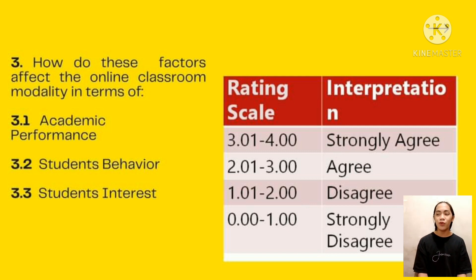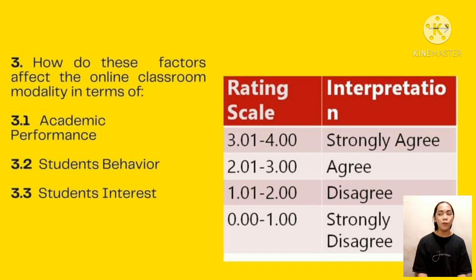The rating scale interpretation is as follows: 2.01 to 2 is interpreted as disagree; 2.01 to 3 is interpreted as agree; and 3.01 to 4 is interpreted as strongly agree.